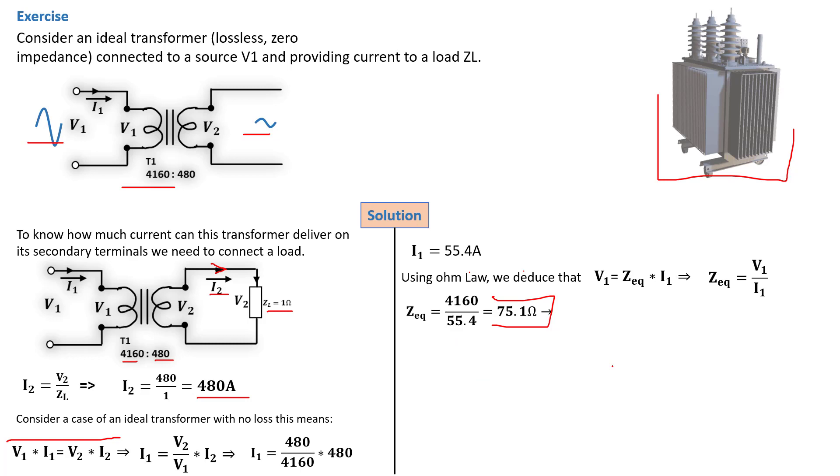The other formula to determine transformer impedance is by using the formula of ratios: V1 over V2 squared times the load impedance. That gives us exactly the same impedance as the previous calculations. This is how transformer impedances are determined.